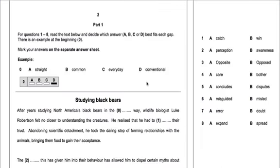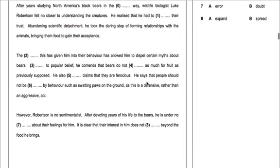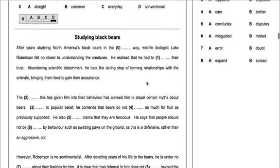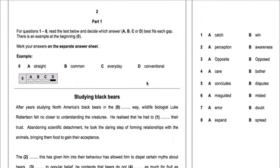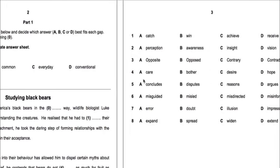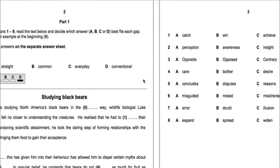Here we have an example multiple choice cloze task taken from the CAE handbook for 2015. As you can see the task contains a short text with 8 gaps, with an additional gap at the beginning that serves as an example. Candidates have to complete each gap with one of the four choices A, B, C or D.